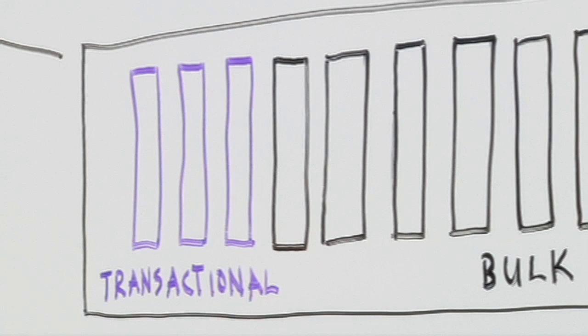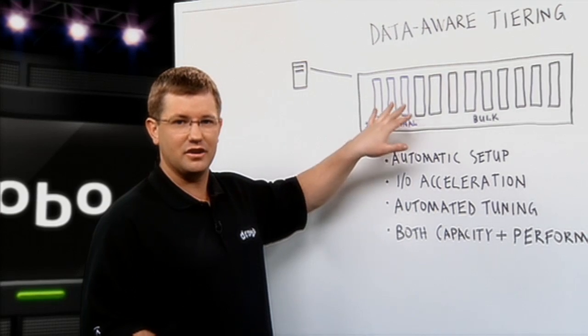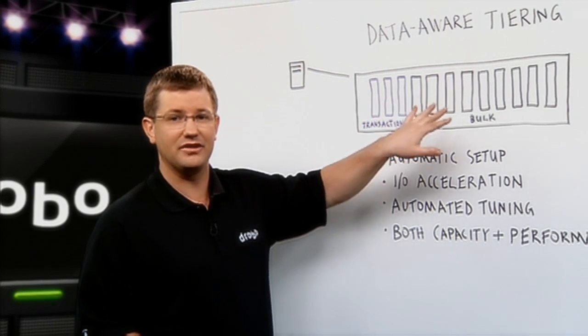With data aware tiering, you can place solid state drives, which are represented by these purple boxes, and hard disk drives, which are represented by the black boxes, into a Drobo. And Drobo will automatically configure itself to utilize them for what they're best good for.